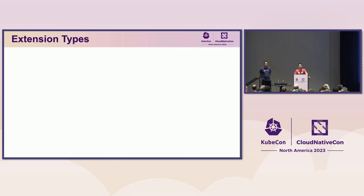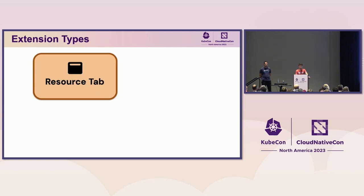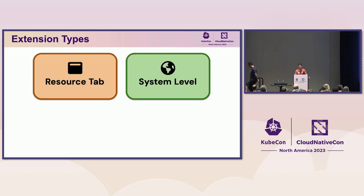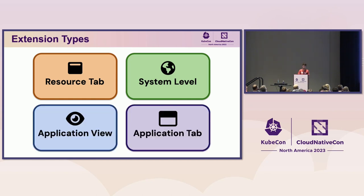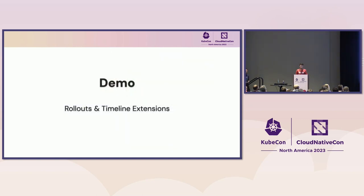There are four types of extension. The first is a resource tab extension. The second is a system level extension. The third is an application view extension. And the fourth is an application tab extension, which is really just a special case of a resource tab extension. With that, I think it makes the most sense to show you where these extensions are in the user interface, so I'm going to give a quick demo.